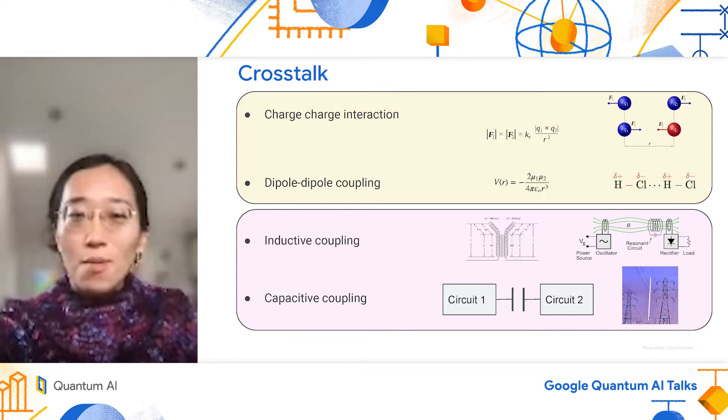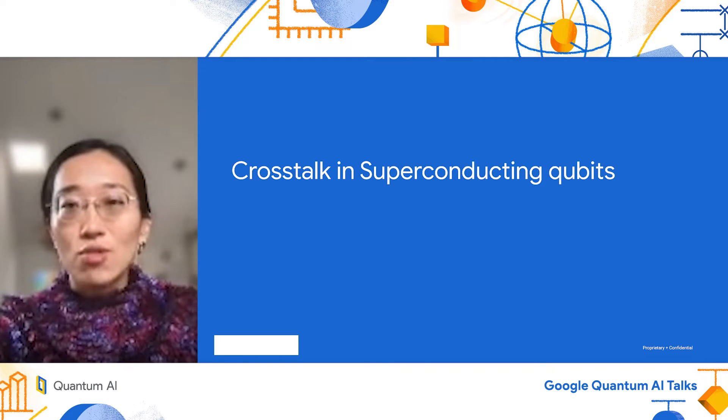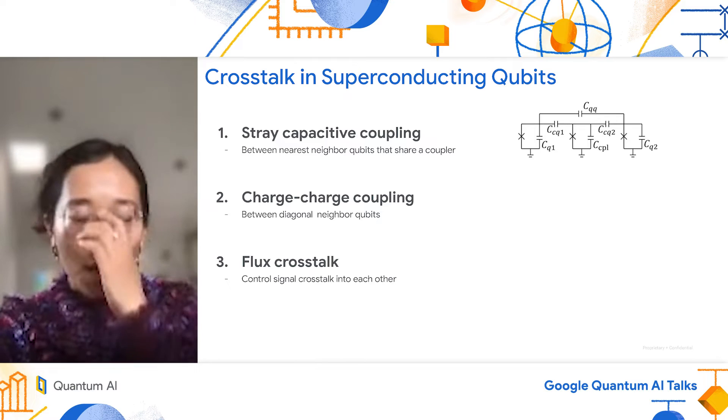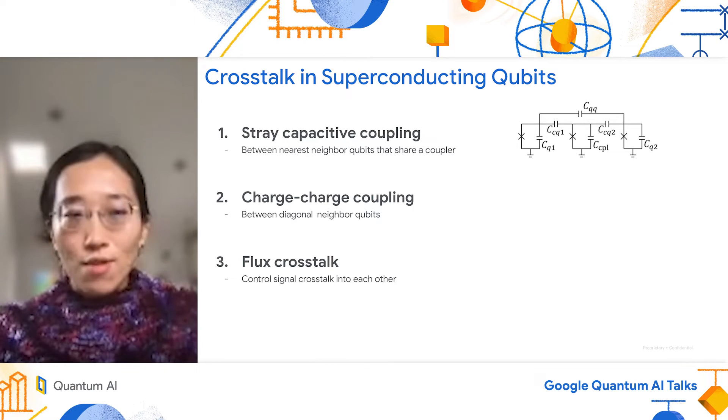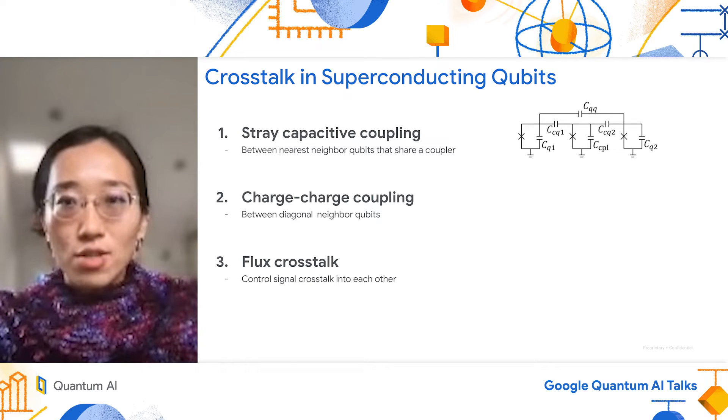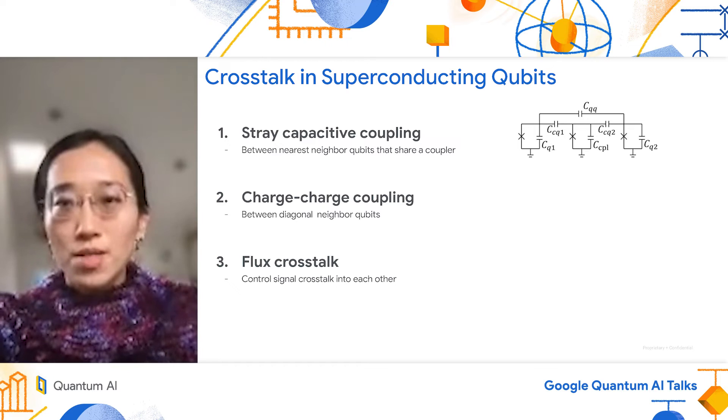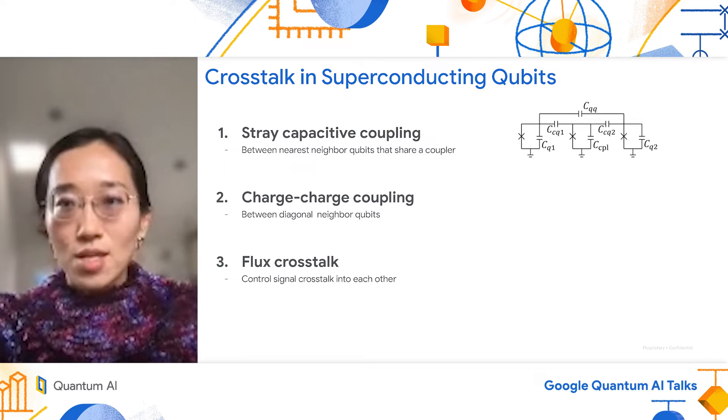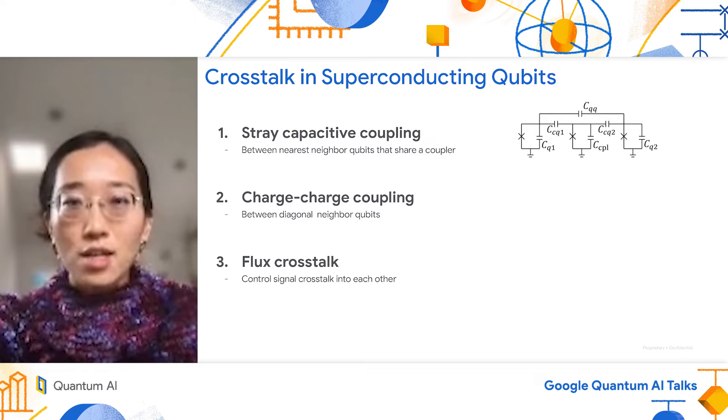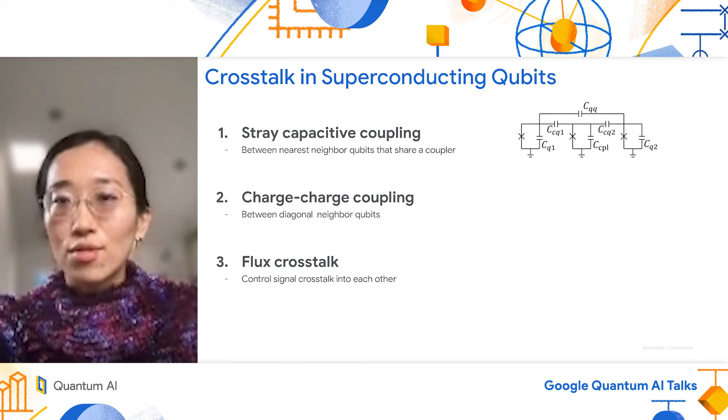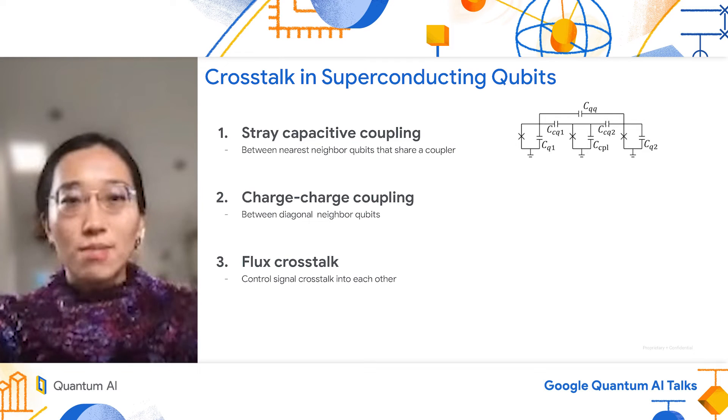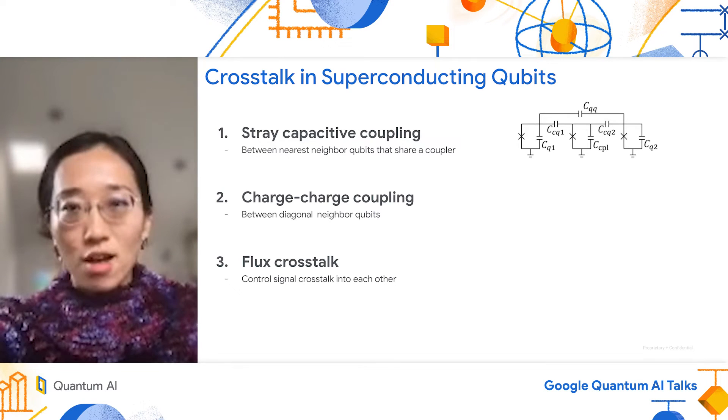Why do we care about crosstalk in quantum computing systems, in particular superconducting qubit systems? The reason is they are everywhere and unavoidable. Here is a circuit of superconducting qubits where each loop represents a qubit. We have three loops. The reason is we use a middle qubit to serve as a coupler to control the coupling between the first and third qubit by changing the frequency of this middle qubit. On the high level, the two qubits are connected directly by capacitor and indirectly by this nonlinear oscillator, so it's obvious there will be crosstalk between the qubits.